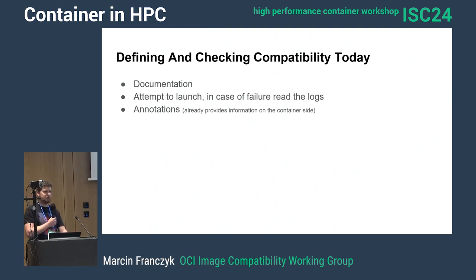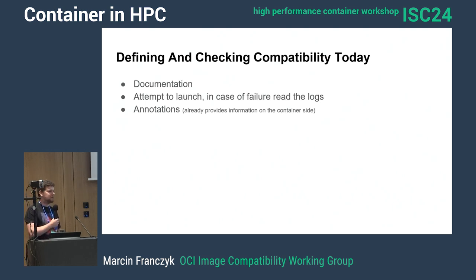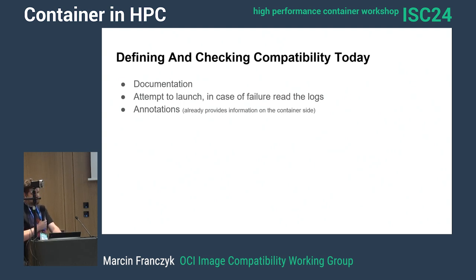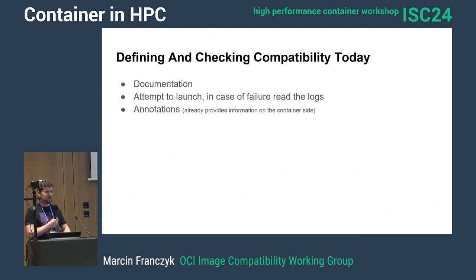How do people define and check compatibility today? First, documentation — people write up special requirements for containers, which is okay but not good for automation. If you want to bring automation based on compatibility metadata, documentation is no good way. Second, attempt to launch and in case of failure read the logs — this is the most common approach I've seen. People just try to run containers, read the logs, try to reconfigure hosts, and loop through this all the time.